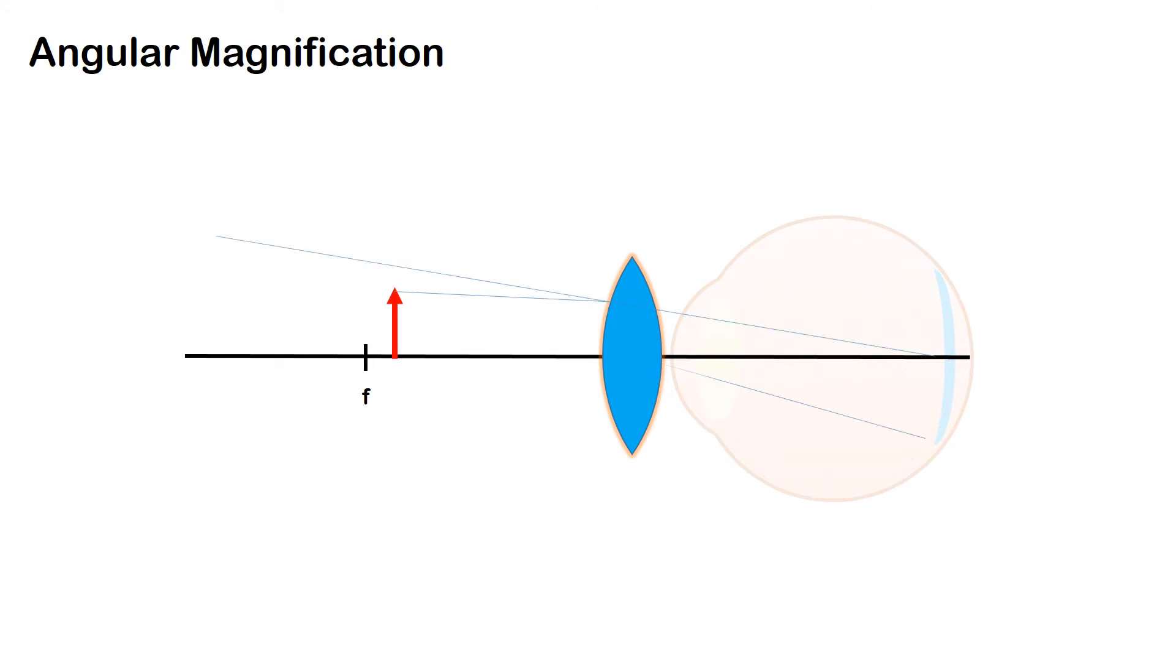The lens now forms a virtual image and it appears to the eye that it is watching a large object kept at a distance which is at distinct vision or beyond the distinct vision.